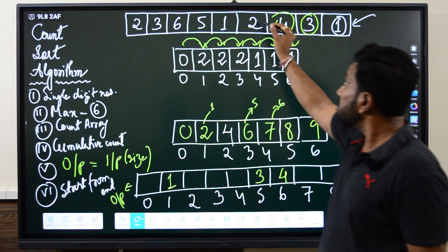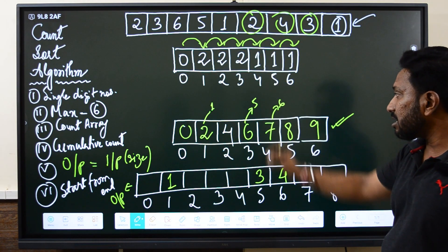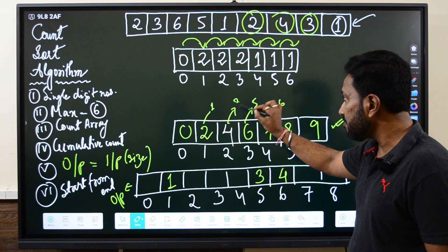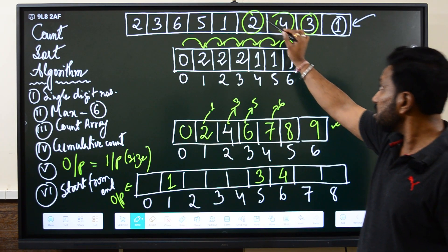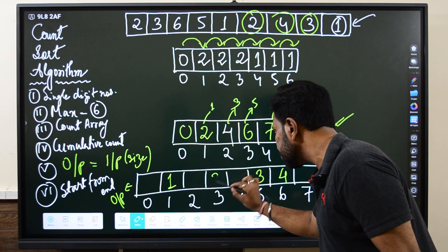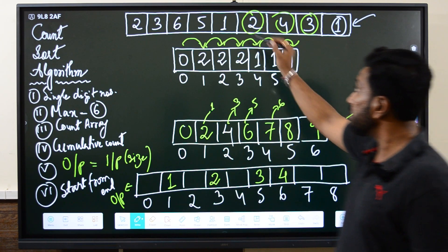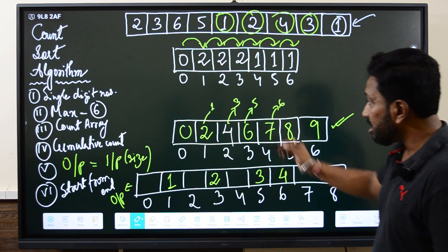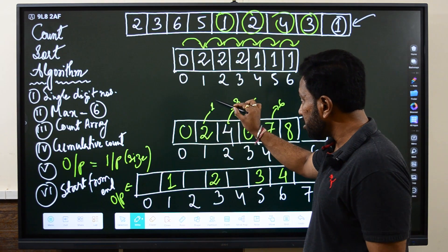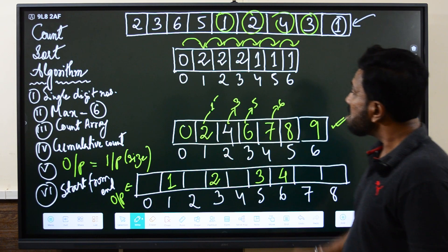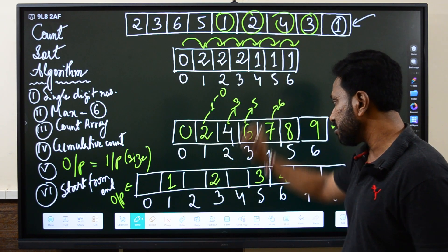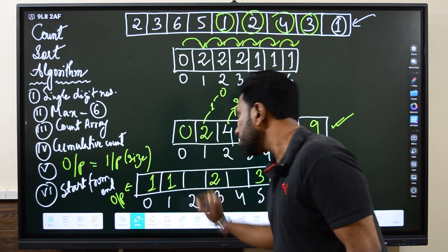Next number now is two. Let us see the count of two. The count of two is four. So four minus one becomes three. At index number three we will store two here. Then next number is one. Again if you see carefully the count of one was decremented to one. So one minus one becomes zero. At index zero we will store one here.